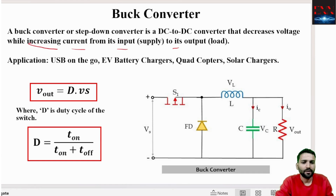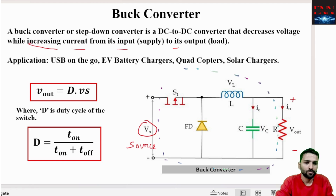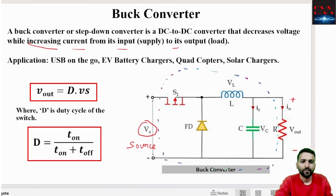The circuit shown here has Vs, which means the source voltage, and Vout is the output voltage. The circuit between these two is known as the buck converter. The resistance is the output load R, and the input is Vs. The relation between input and output voltage is: Vout equals D times Vs, where D is the duty cycle.